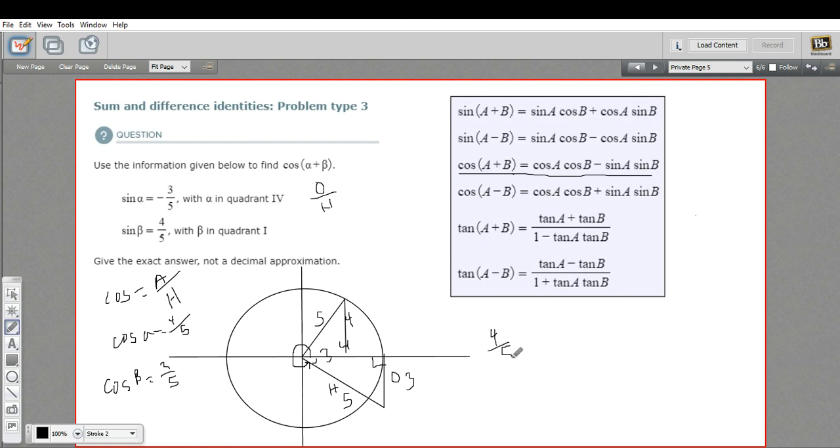The cosine of A is four fifths times the cosine of B, which is three fifths, minus the sine of A, which is negative three fifths, times the sine of B, which is four fifths. Let's do our multiplication, we get 12 twenty-fifths, minus a negative, so that's a positive, and this is also 12 twenty-fifths.